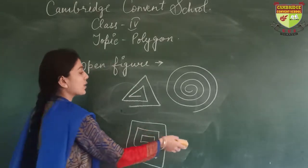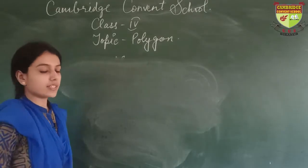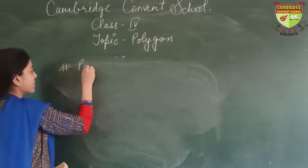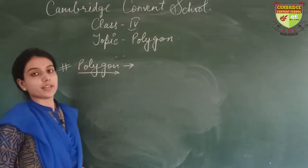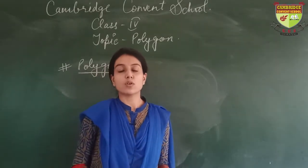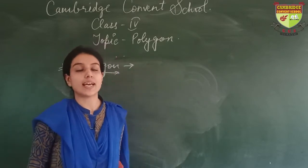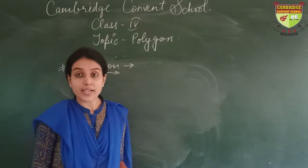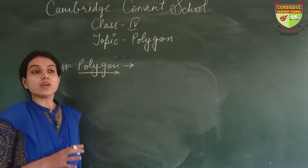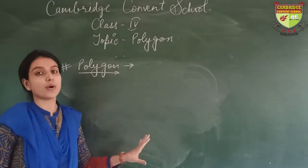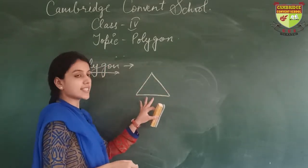So now we will discuss about polygon. What is polygon? A polygon is a closed geometrical figure bounded by 3 or more than 3 line segments. An example is a triangle, which has 3 sides and is known as a polygon.